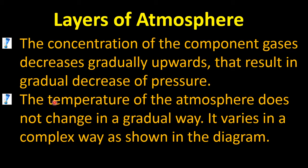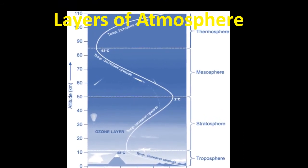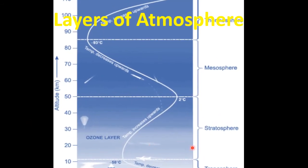When we move upwards, concentration of gases decreases, resulting in a gradual decrease of pressure. Regarding temperature, it does not change in a gradual way — it varies in a complex way. As discussed, thermosphere has too much heat while mesosphere is the coldest region. In troposphere, as we move upwards temperature decreases; in stratosphere it increases; in mesosphere it decreases again; and in thermosphere it increases upwards.